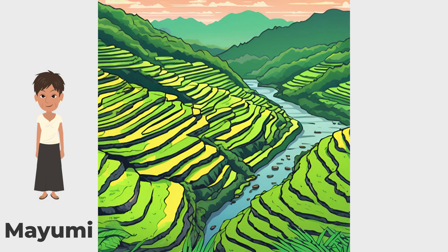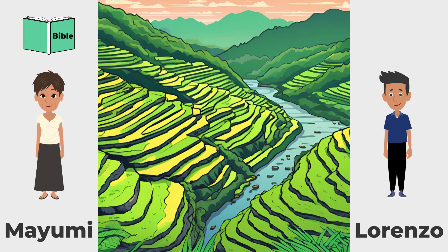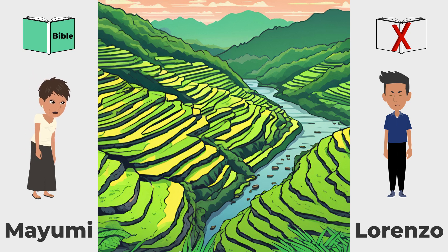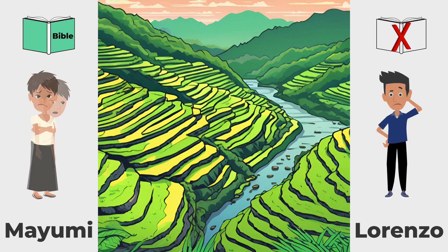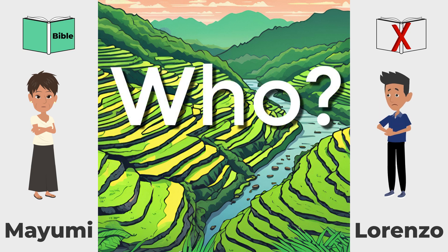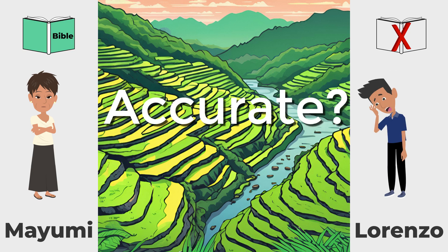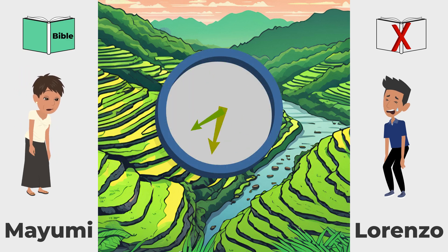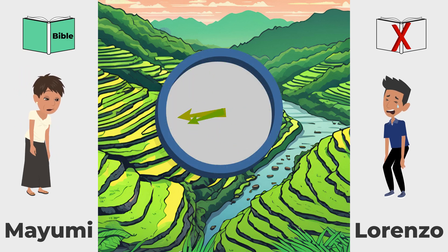Mayumi recently received the full Bible in her own language. Lorenzo, who lives an hour down the river, has no Bible in his language. Lorenzo's language isn't that different from Mayumi's, but it's different enough that he can't understand everything. Who can translate the Bible for Lorenzo while maintaining a high level of accuracy? And is it going to take decades like it did in Mayumi's original language translation?